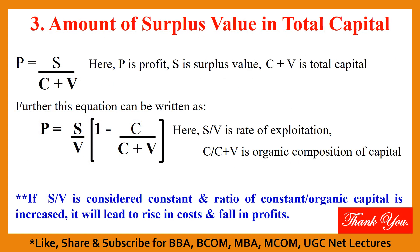The third and last ratio tells us the amount of surplus value in total capital. Here p is equal to s upon c plus v, where s is the surplus value, p is the profit, and c plus v is the total capital. On further simplifying this equation, we get that p equals s upon v multiplied by a function of the organic composition of capital, where s upon v is the rate of exploitation and c upon c plus v is the organic composition of capital.